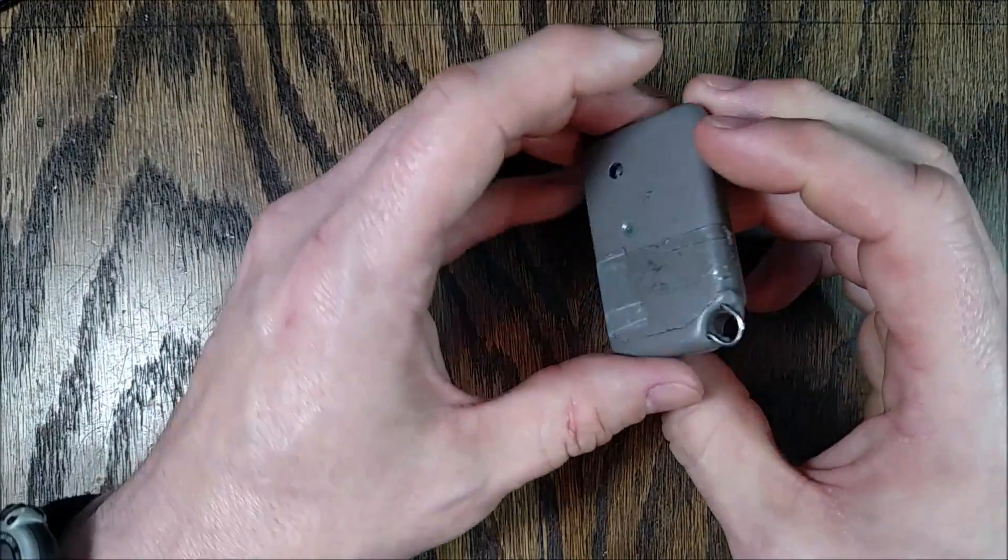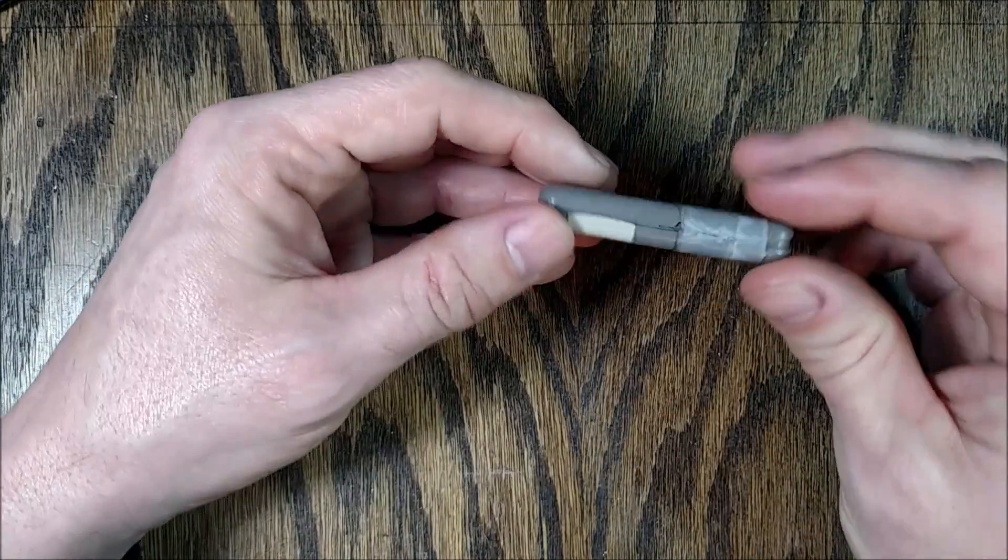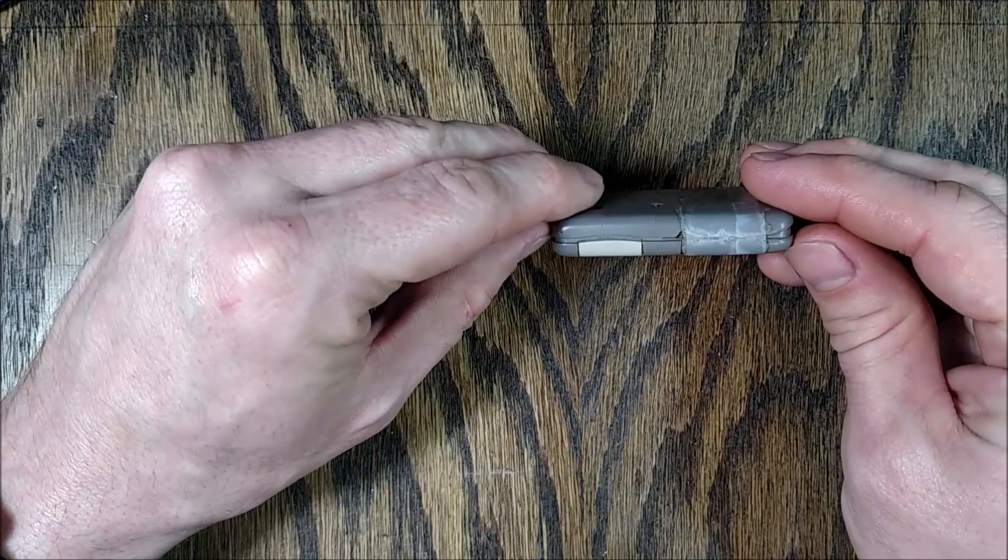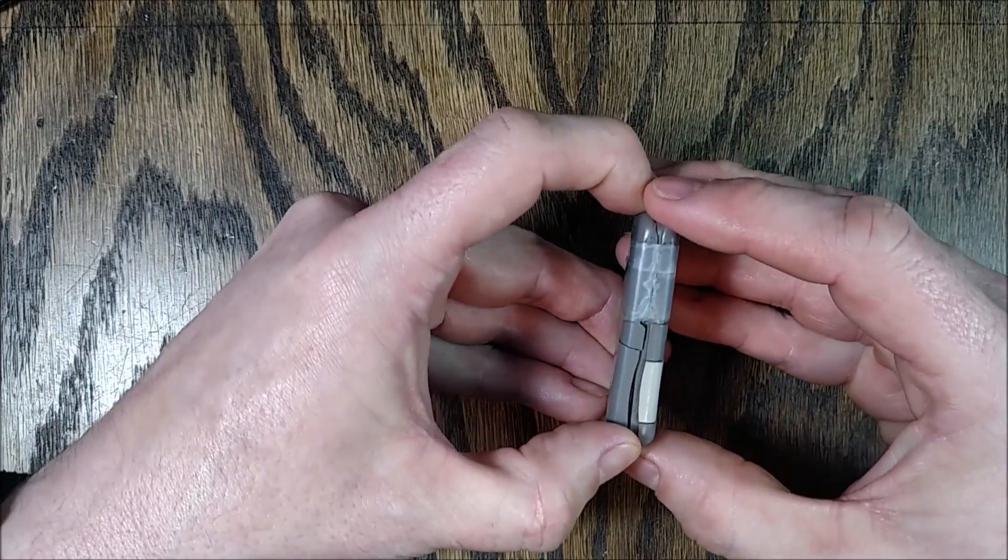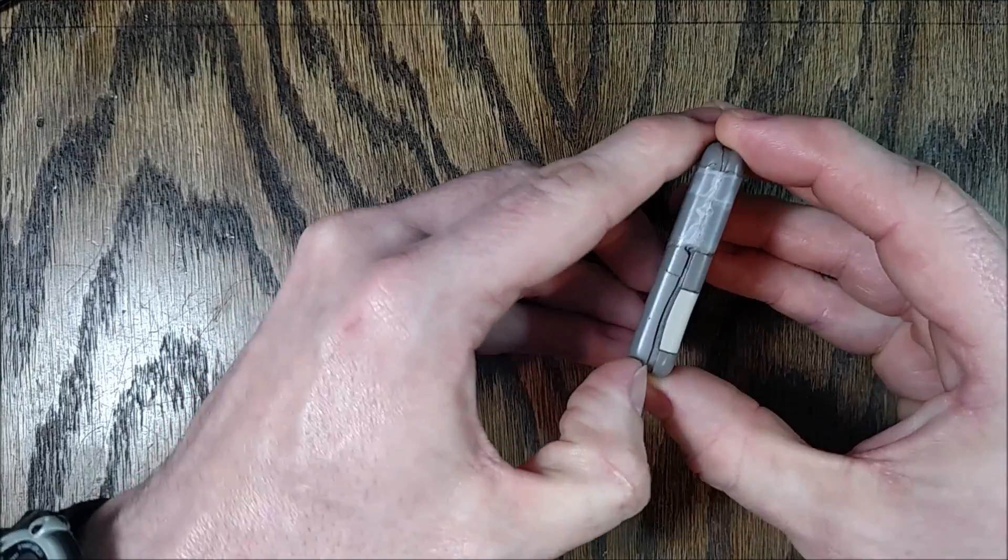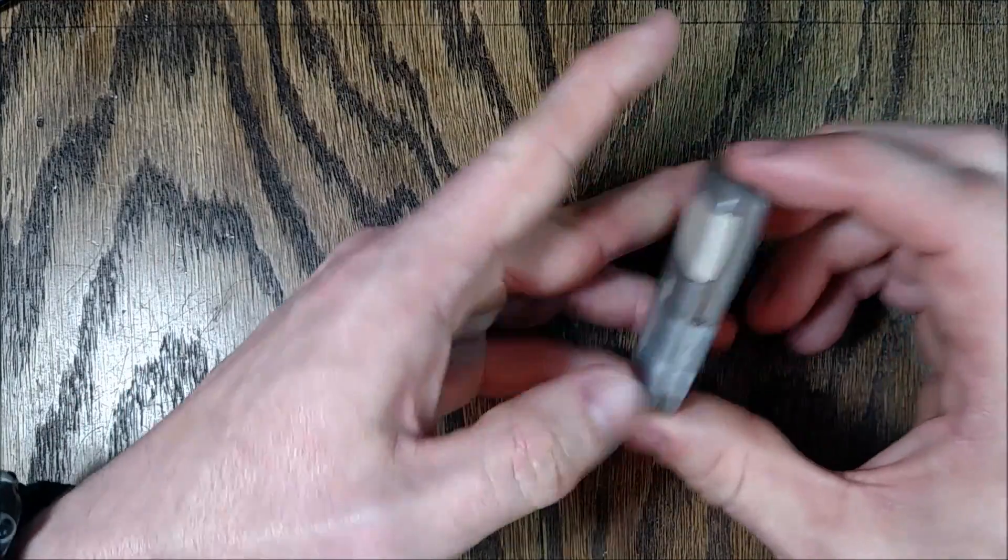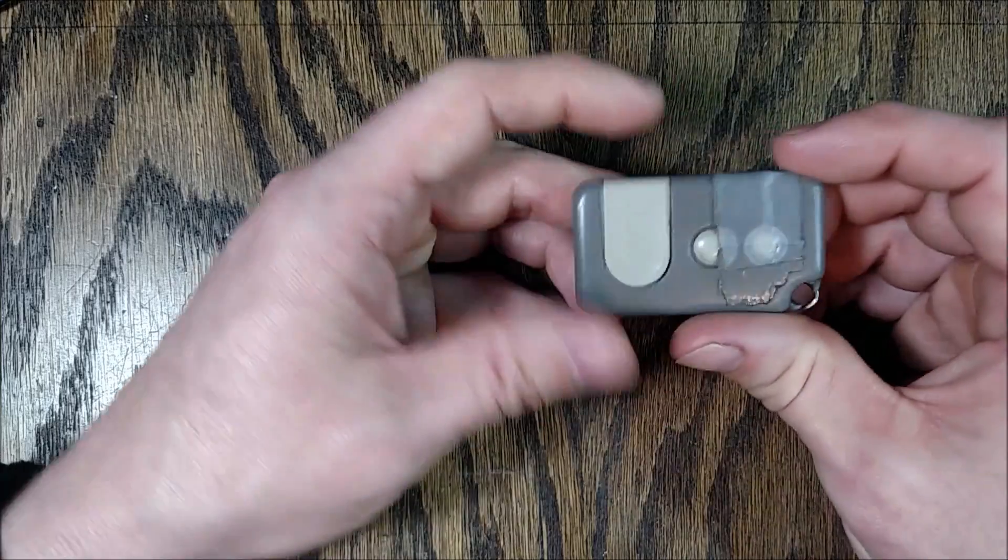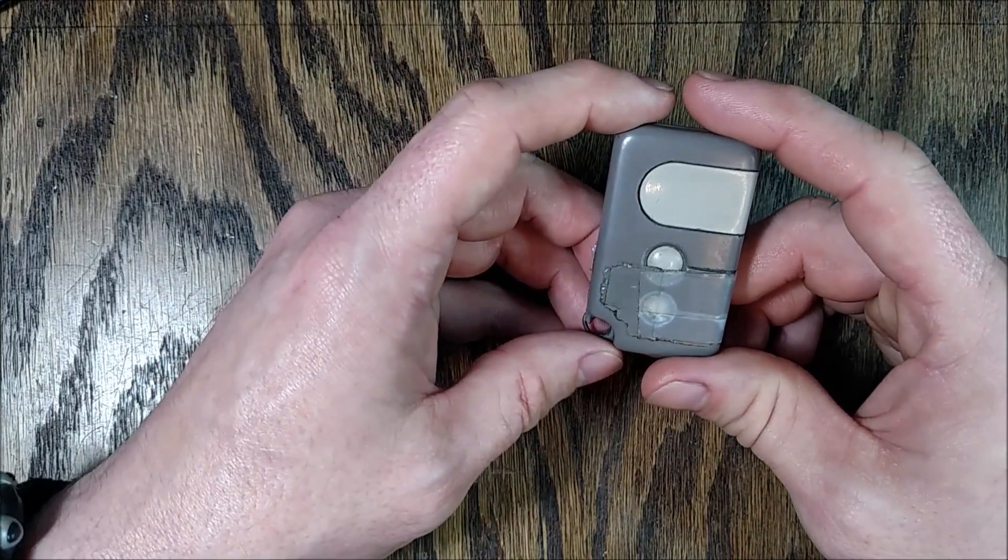The other problem that happens is the little catches on the side that hold the two halves of the case together break, so there's really nothing holding it together, which is why I have tape on it right now.